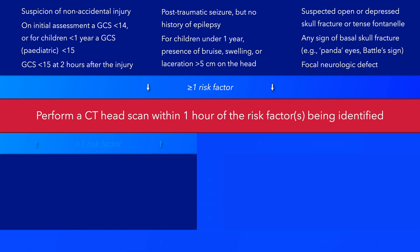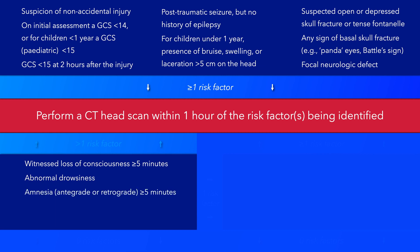If none of the aforementioned risk factors are present, then further assess for the following risk factors. Witnessed loss of consciousness greater than 5 minutes in duration, abnormal drowsiness, amnesia either anterograde or retrograde lasting for greater than 5 minutes in duration. Keep in mind that this assessment is not possible in preverbal children and unlikely in any child under 5 years. Three or more discrete episodes of vomiting.